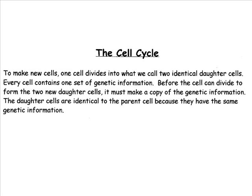Today we will take a more detailed look at what happens inside a cell as it completes the steps of the cell cycle. To make new cells, one cell divides into what we call two identical daughter cells. Every cell contains one set of genetic information. Before the cell can divide to form the two new daughter cells, it must make a copy of the genetic information.